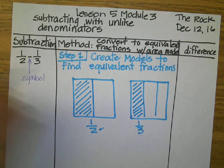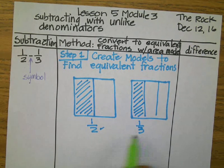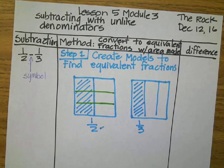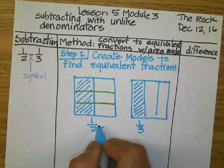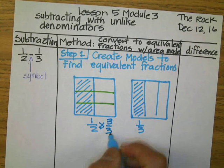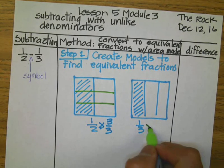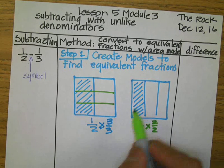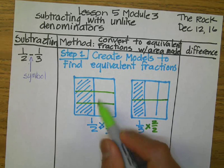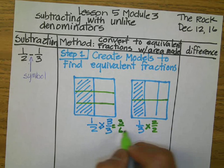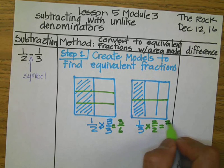We're going to multiply the parts using the opposite denominator. In this case, two is the denominator for this fraction, and the opposite is three. So we divide that into three parts — we are basically multiplying the fraction by three-thirds. Now we're going to use the opposite denominator, which is two, to multiply the one by two, and we divide it in half, because this is what we did on the model.